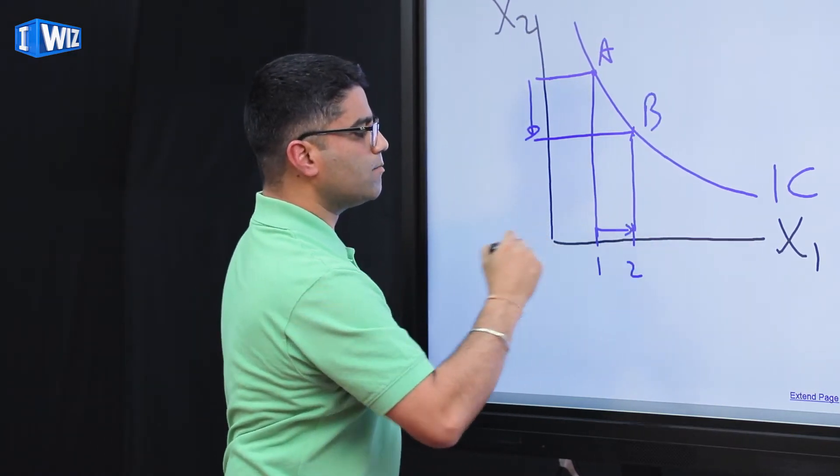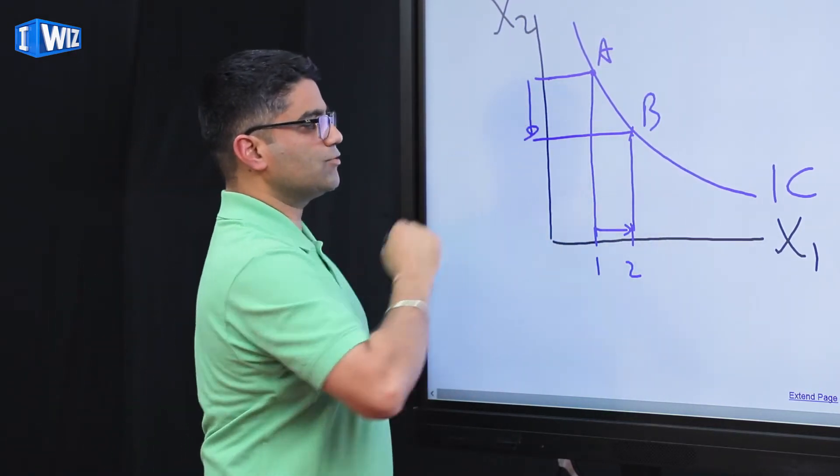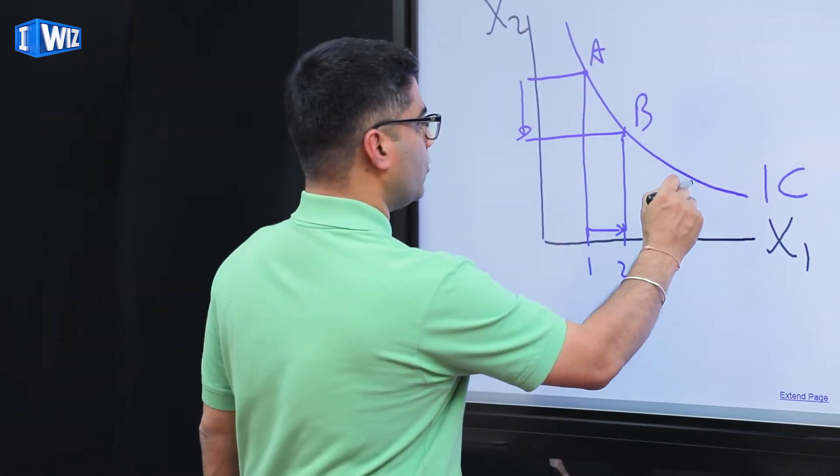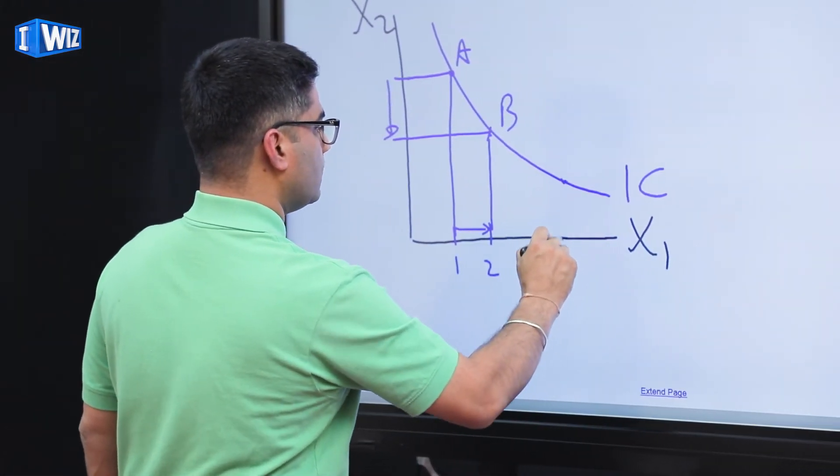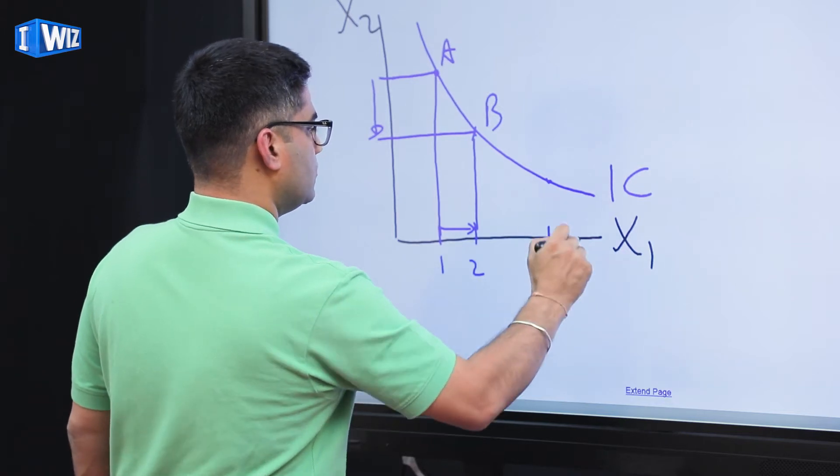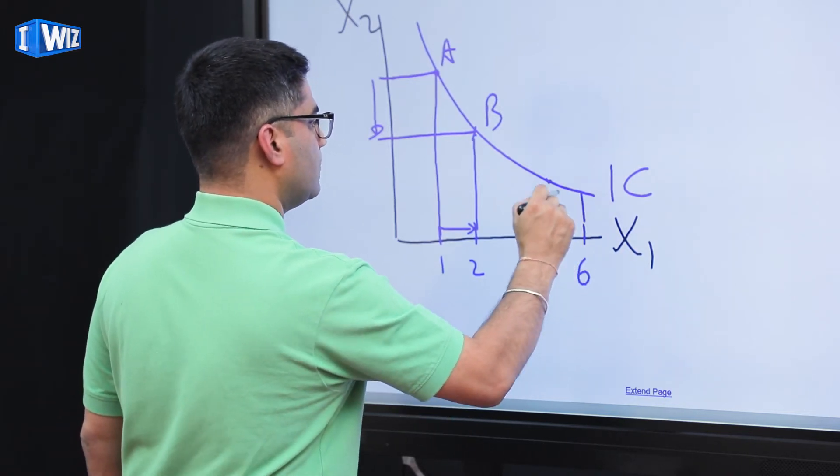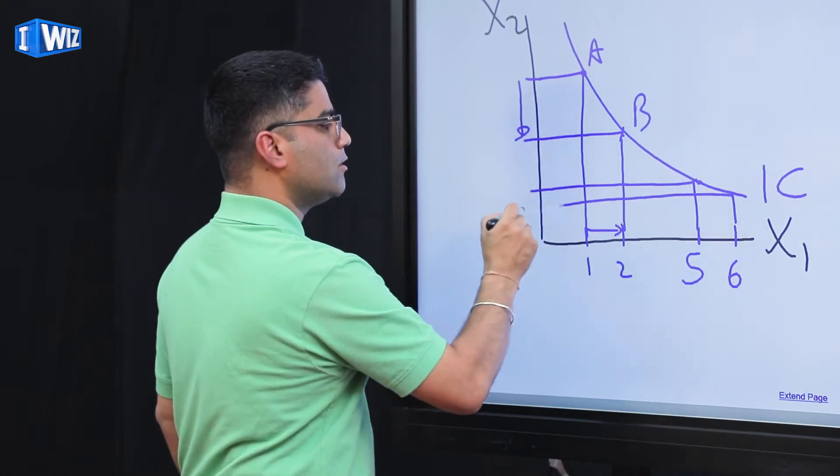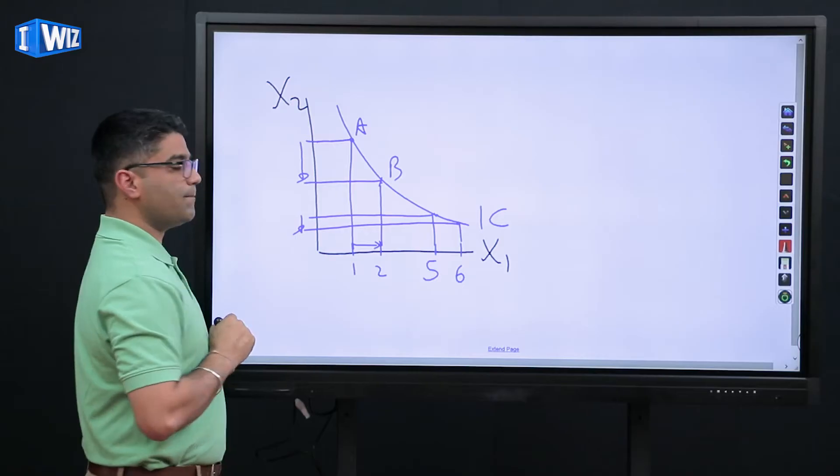Let's say you go from 1 to 2, the amount of x2 you're willing to give up is going to be this much. So going from bundle A to bundle B, to get one more unit of x1, I'm going to be willing to give up that much x2 and be equally happy.